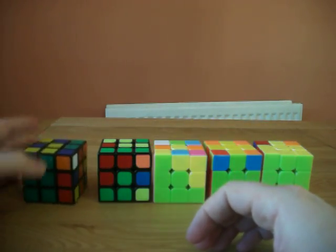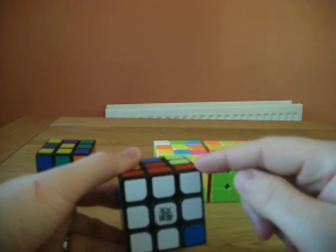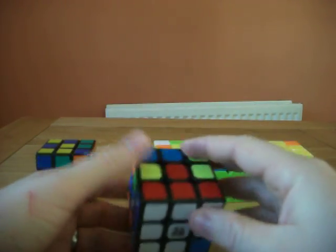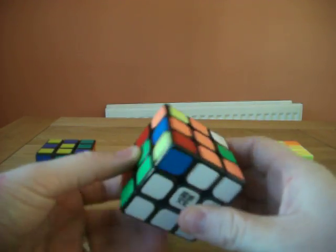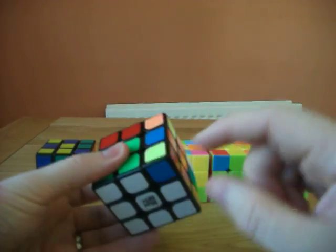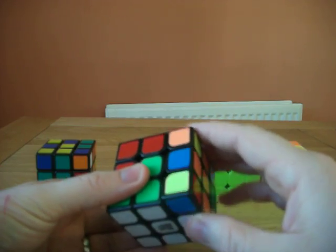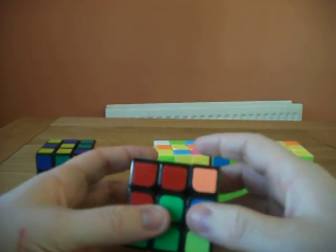Once you have a cross side, you then solve three corners, making sure that they're in the right places, and you leave one free. This is so that you have space to work with when doing the next step.